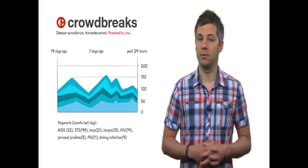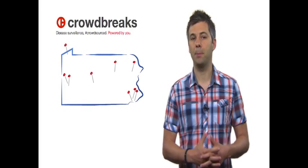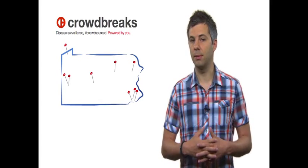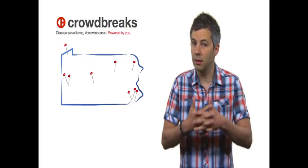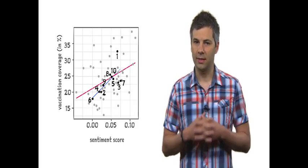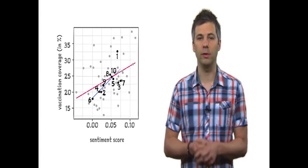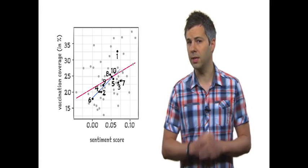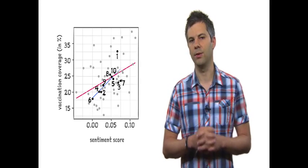For example, we can build real-time maps of where people seem to express certain symptoms or where sentiments about vaccination seem to be particularly negative. My own research has shown that the sentiments expressed about influenza H1N1 vaccination in 2009 were a good predictor of vaccination rates in the U.S.